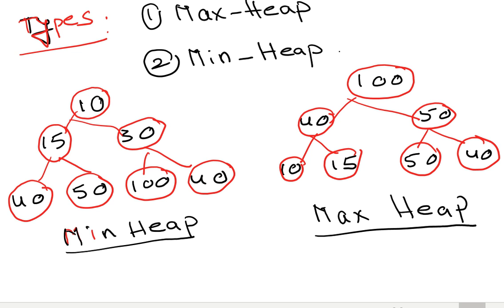A heap tree is a complete binary tree. How many types do we have? Max heap and minimum heap. I have drawn the min heap tree and max heap tree. What is the difference? In the minimum heap, the root has the minimum value, whereas in the max heap, it has the maximum value.